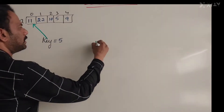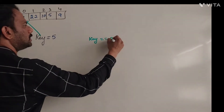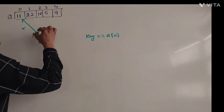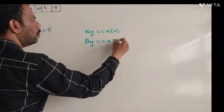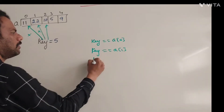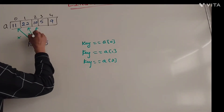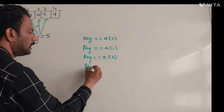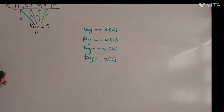We compare: is key equal to a[0]? Check if these two are matching — no, mismatch. Then we check key equal to a[1] — again mismatch. Then key equal to a[2] — again mismatch. Then key equal to a[3] — now it matches: five is equal to five. So now we stop.